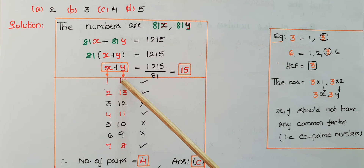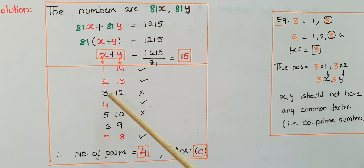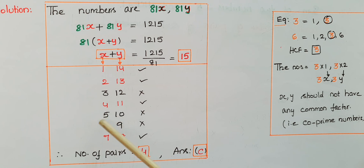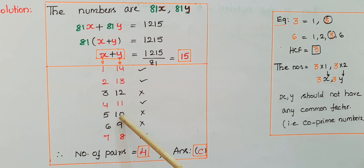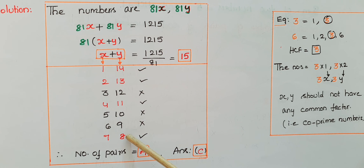Checking co-primality: (1,14) — no common factor, correct. (2,13) — also correct. (3,12) — common factor of 3, not correct. (4,11) — co-prime, correct. (5,10) — not co-prime because 5 is a common factor. (6,9) — 3 is the common factor, not co-prime. (7,8) — no common factor, correct. So there are 4 valid co-prime pairs.